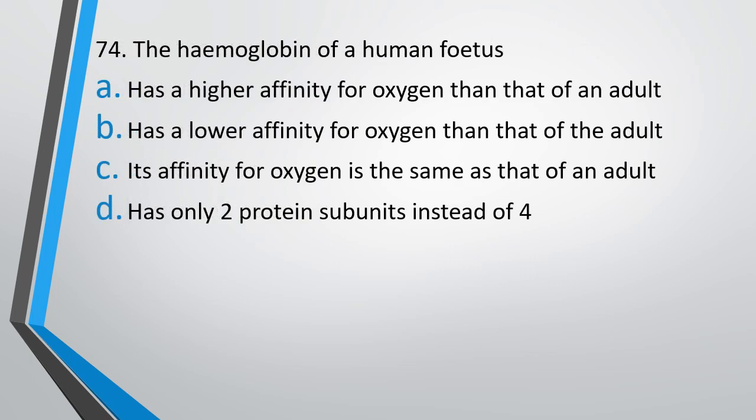Question number 74. The hemoglobin of human fetus has a higher affinity for oxygen than that of an adult, has a lower affinity for oxygen than that of an adult, its affinity for oxygen is same as that of an adult, or has only 2 protein subunits instead of 4? The correct answer is Option A - it has more affinity or higher affinity for oxygen than that of an adult hemoglobin.